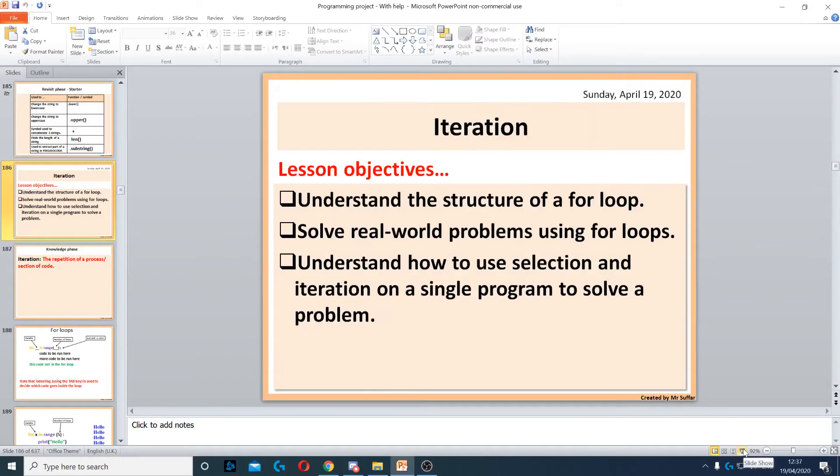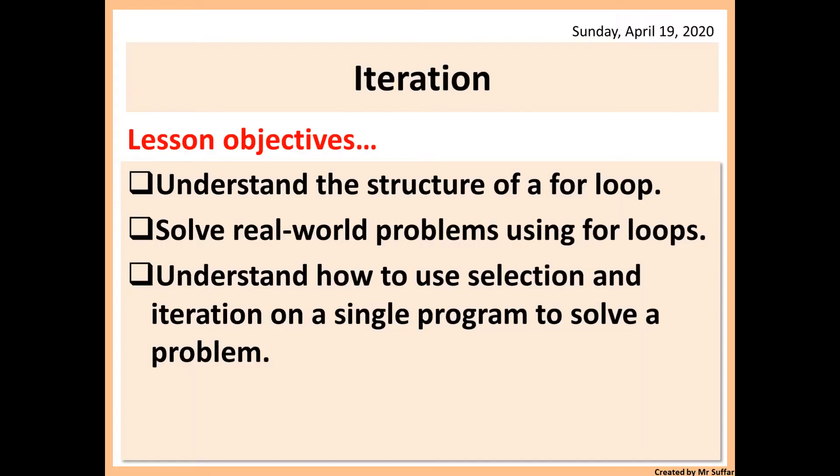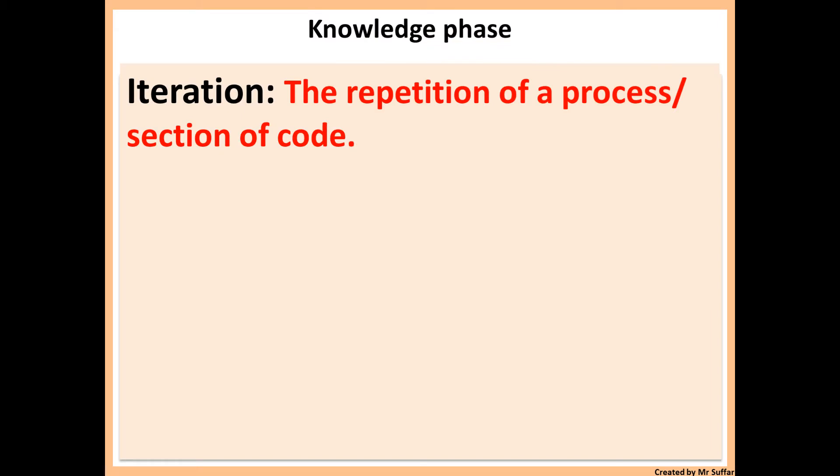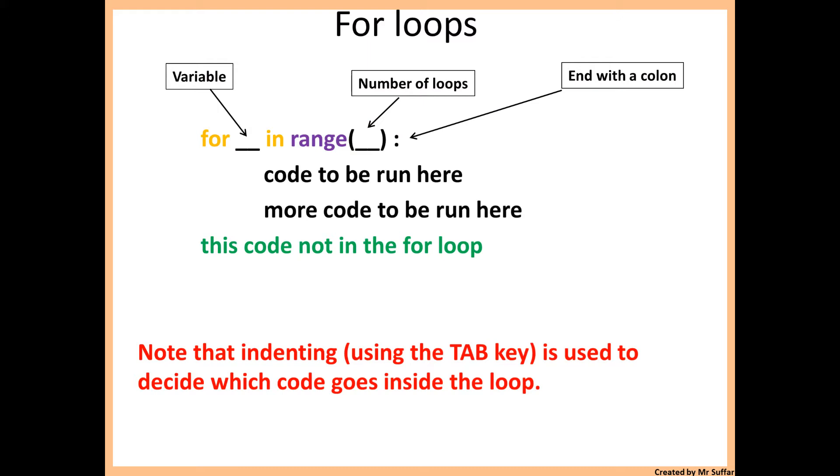In this lesson we're going to cover iteration. Iteration is the repetition of a process or a section of code. Whenever you repeat something in code, that's called iteration. One of the types of iteration is called a for loop.